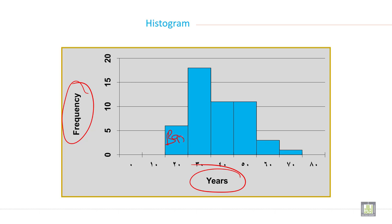So class and frequency and then this is called bar. The bars show the data on a graph.